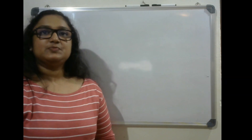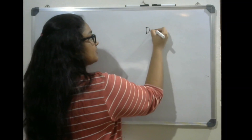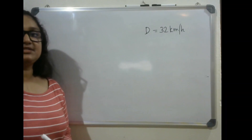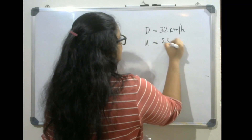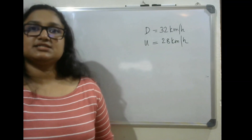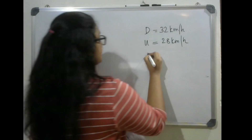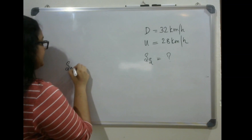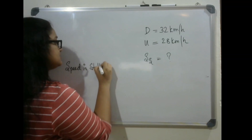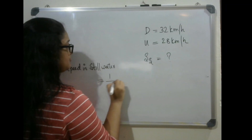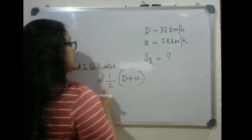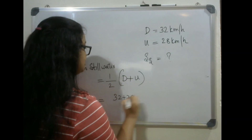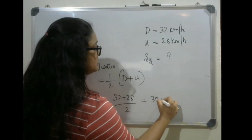Moving on to the next question. The speed of a boat when traveling downstream equals 32 kilometers per hour, whereas when traveling upstream it is 28 kilometers per hour. What is the speed of the boat in still water? This is a rather direct question where speed in still water equals half of upstream rate plus downstream rate, which is 28 plus 32 by 2, that equals 30 kilometers per hour.